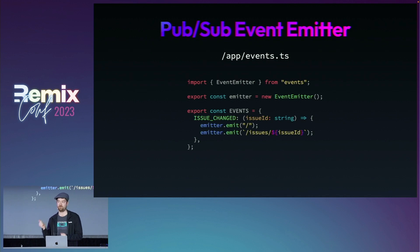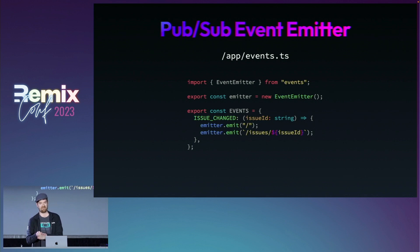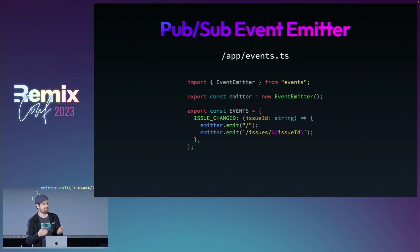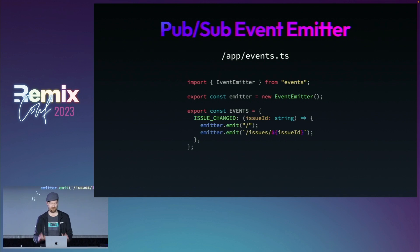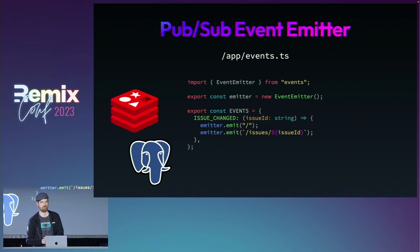In this example, I'm using Node's Event Emitter. I've got my object called events that I'm able to call for the different events that can happen. So when an issue changes for an issue tracker like Linear, it's actually going to trigger two different things on the Event Emitter — one for slash for the index route, and one for slash issues slash issue ID. So any time a client on one of those pages gets one of these messages, it's going to revalidate. There are a number of things you might want to do if running this in production, like using an actual pub-sub system like Redis or Postgres or any number of SaaS options. But for our demo, this will work just fine.